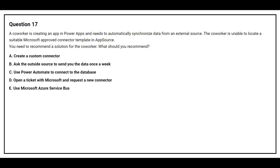Question 17: A co-worker is creating an app in Power Apps and needs to automatically synchronize data from an external source. The co-worker is unable to locate a suitable Microsoft-approved connector template in AppSource. You need to recommend a solution. Options: A) Create a custom connector, B) Ask the outside source to send data once a week, C) Use Power Automate to connect to the database, D) Open a ticket with Microsoft and request a new connector, E) Use Microsoft Azure Service Bus. The correct answer is option A: Create a custom connector.